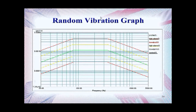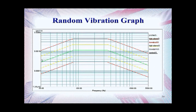Here's an example of a Random Vibration Graph. The vertical axis is expressed in G squared per hertz, which is power spectral density — random vibration in units of measurement is expressed as power spectral density. On the horizontal axis, once again, you have frequency, and this is from 20 to 2,000 hertz. This profile is typically called the NavMAT profile.